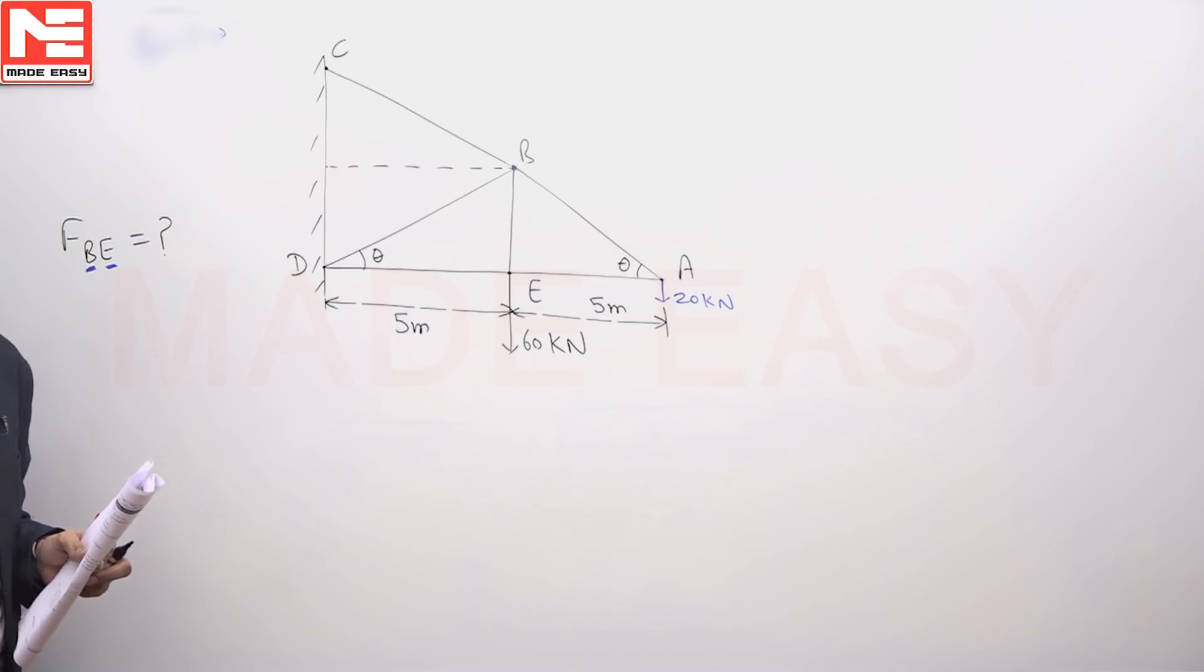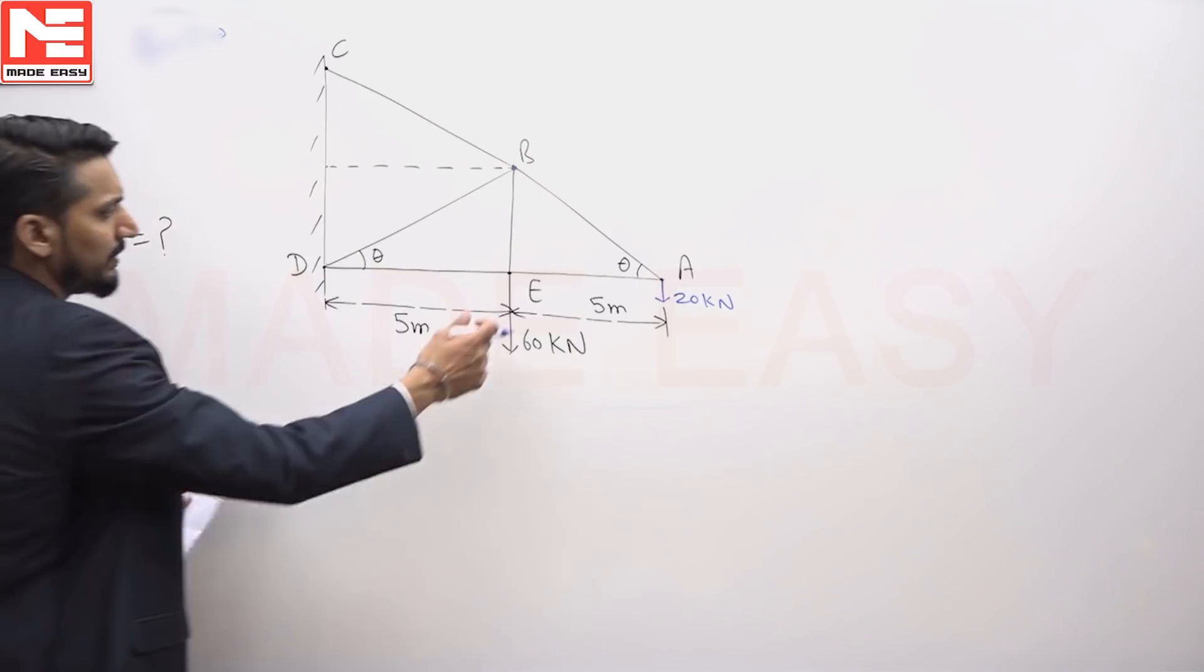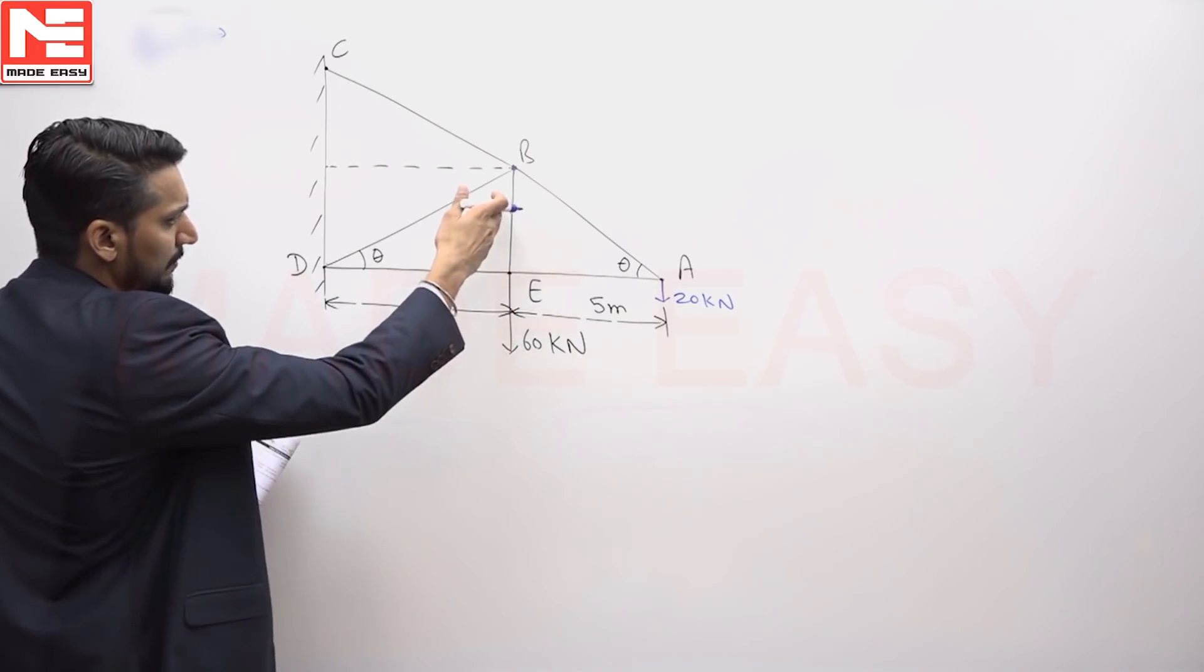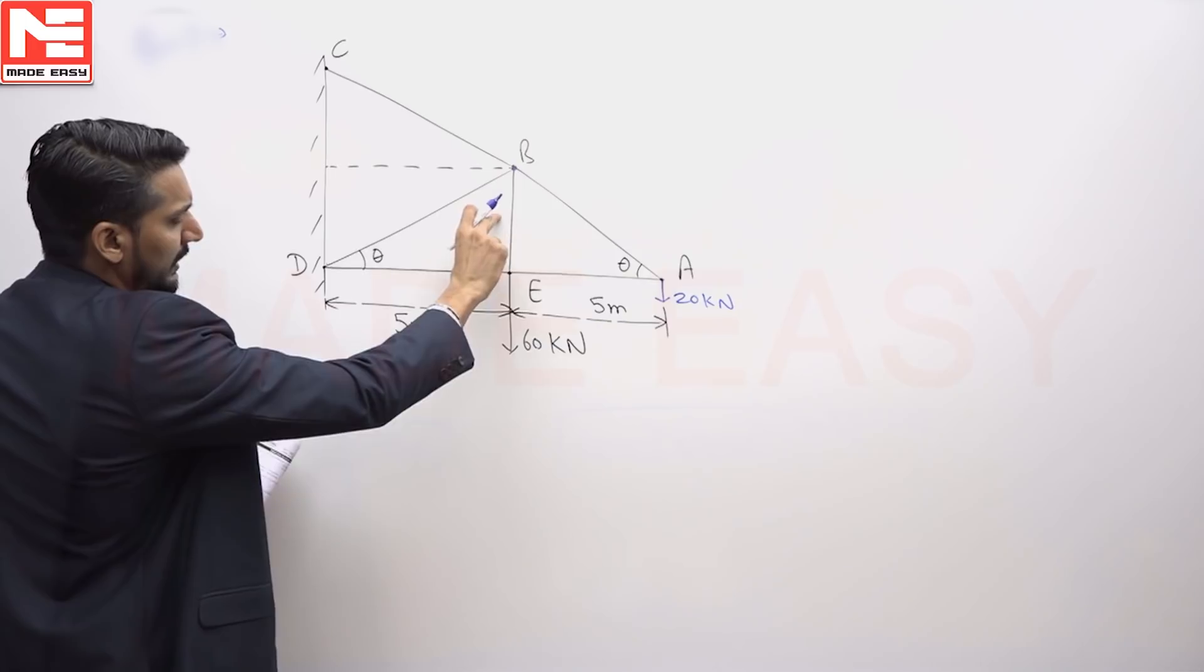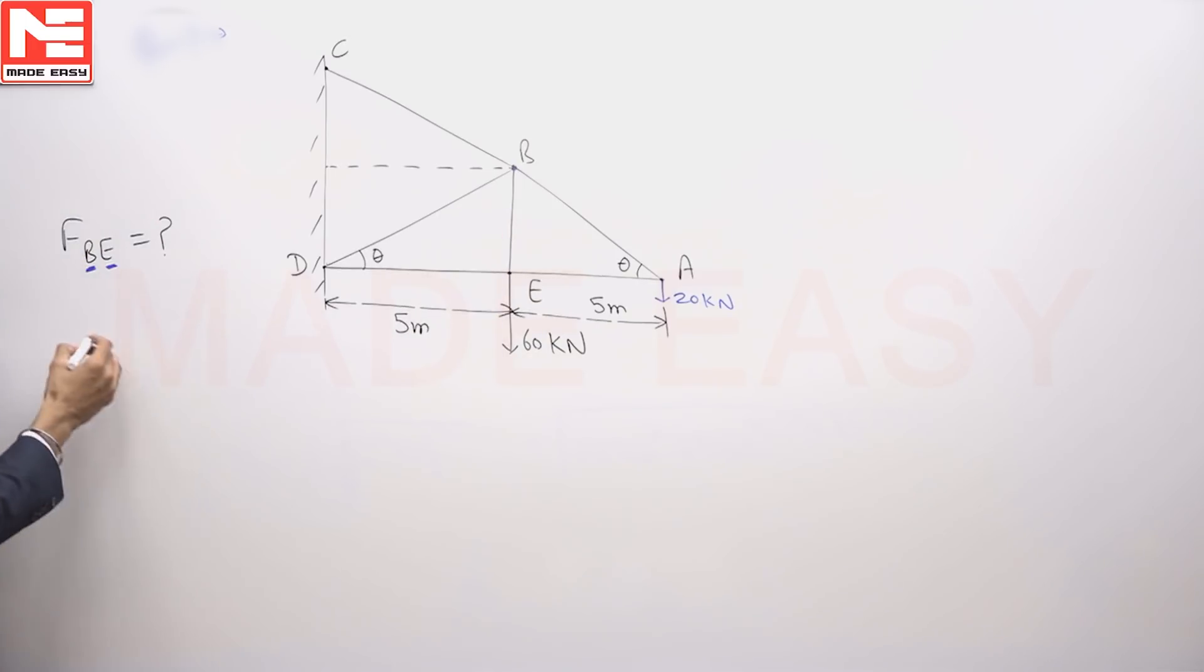First I need to find out force in the 2 members then only I can find out the force in the rest of the 2 members. But if I consider at joint E, can't you see easily the members are in horizontal and vertical direction. It will be very easy for me to find out at joint E because there is only 2 unknowns at joint E.